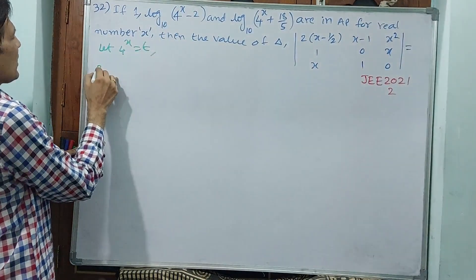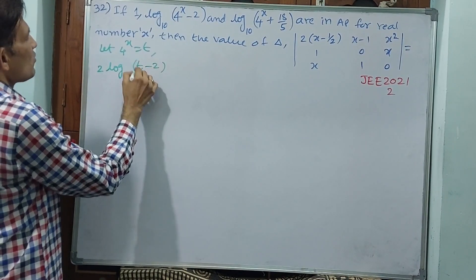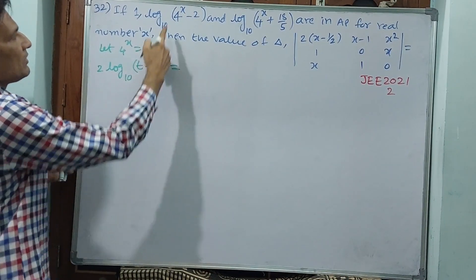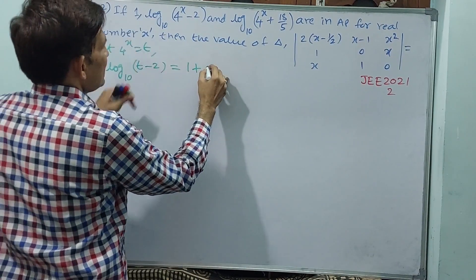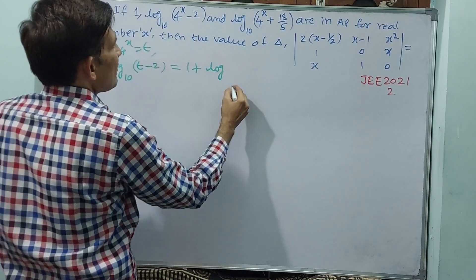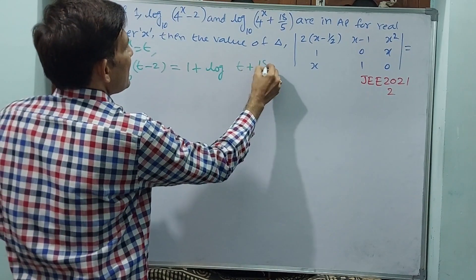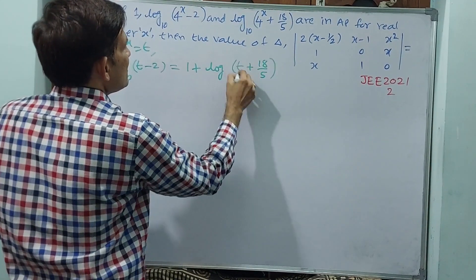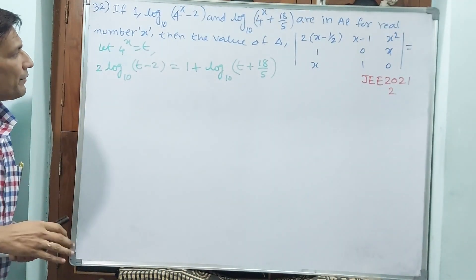Then I am going to write this: two times of log of (t - 2) to the base 10 is equal to, okay, 1 plus log of (t + 18/5) to the base 10.